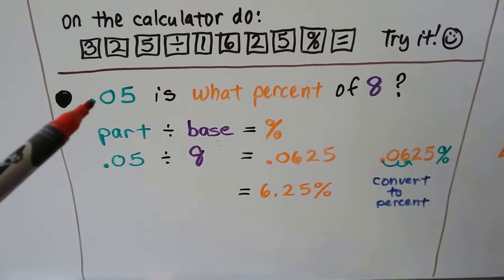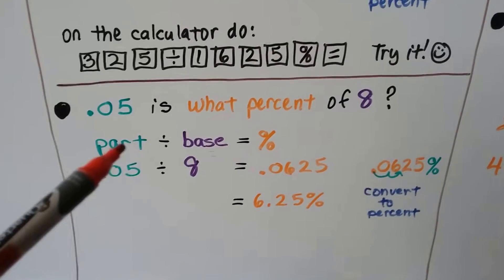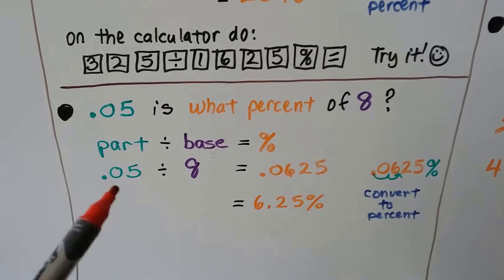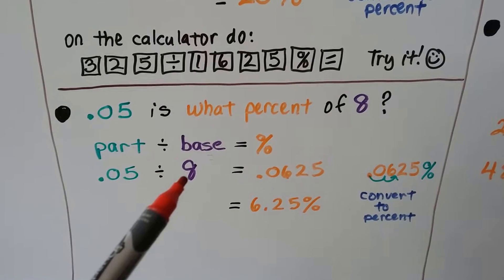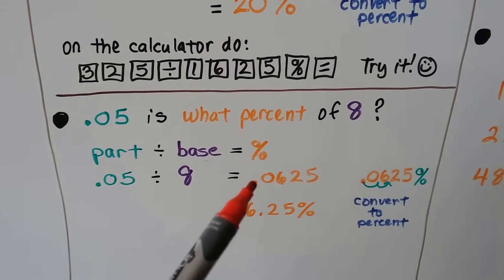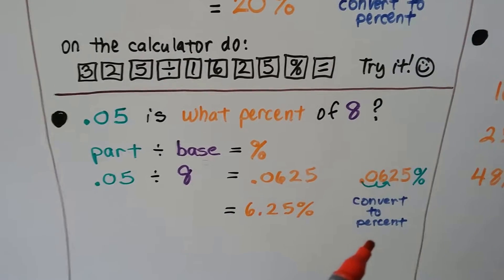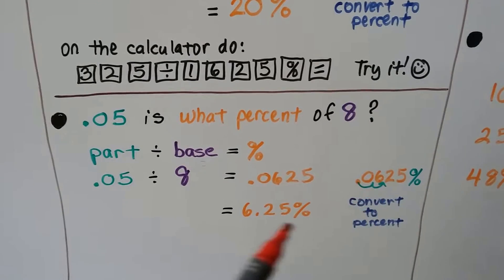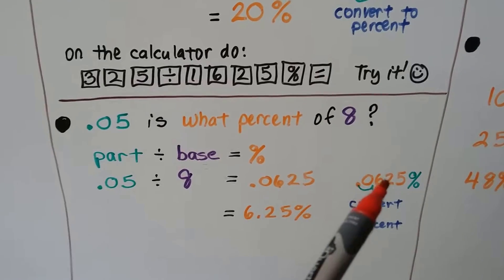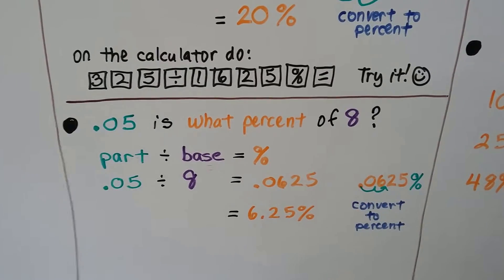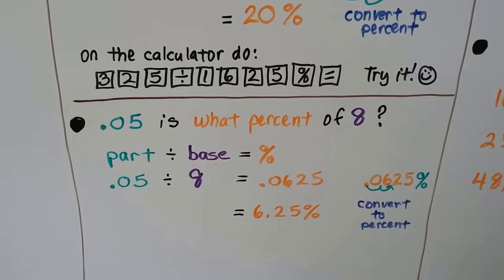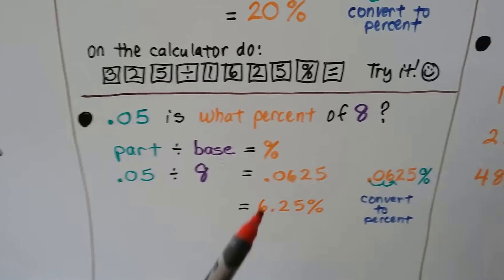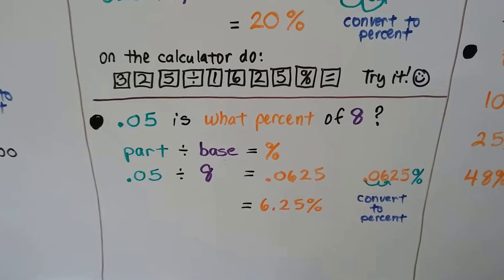We have 5 one-hundredths — 0.05 is what percent of 8? We do the part divided by the base. 0.05 is the part and 8 is the base. 0.05 divided by 8 equals 0.0625 on the calculator. We need to convert it to a percent by moving the decimal point over, and we get 6.25 percent. It could also be written as 6 and one-fourth percent, since 0.25 equals one-fourth.